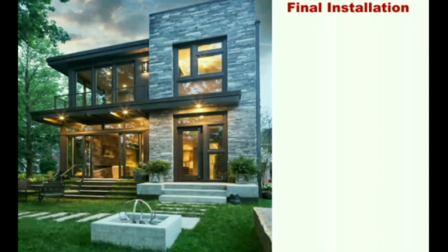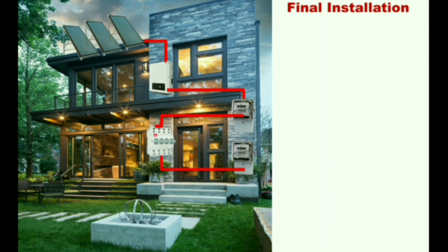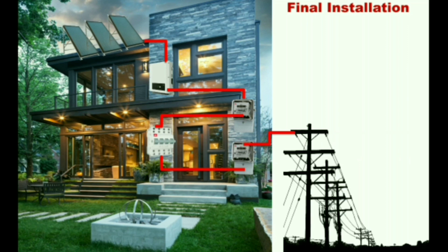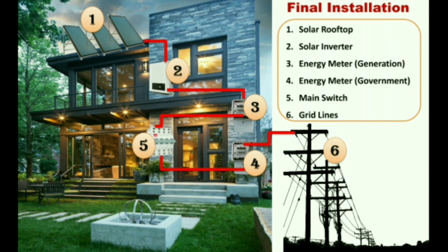For the final installation: solar plates are installed on the roof, then a solar inverter is installed. An energy meter is needed to calculate generated power and is connected with the main switch of the residence. One more meter is connected with the grid-connected lines and also connected with the main switch. Finally, this connection goes to the utility grid. These are the final steps for installing the plant, making it ready for residential use.